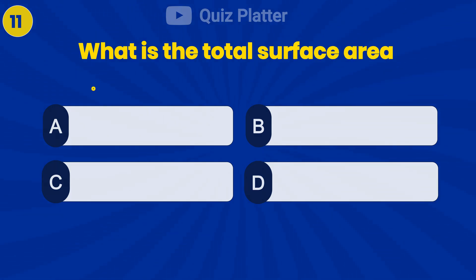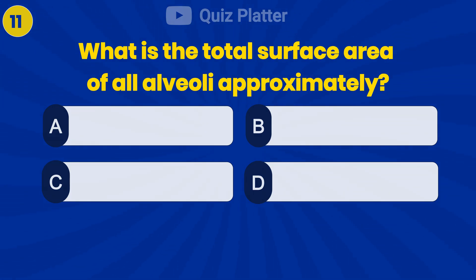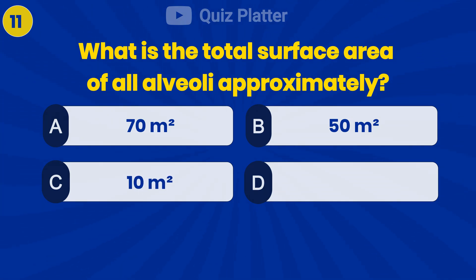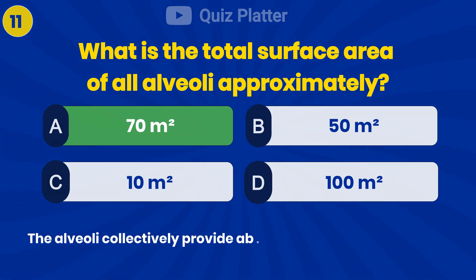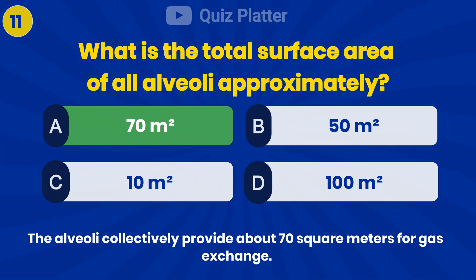What is the total surface area of all alveoli approximately? Answer A: 70 square meters.